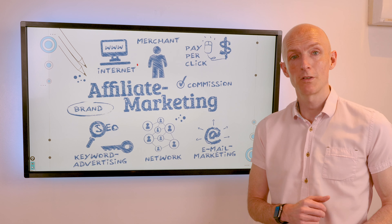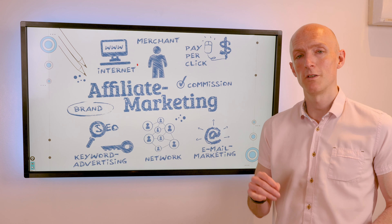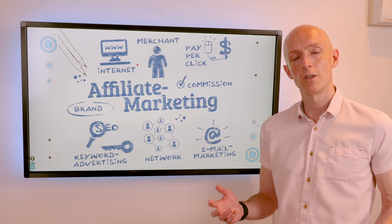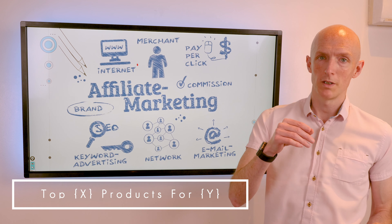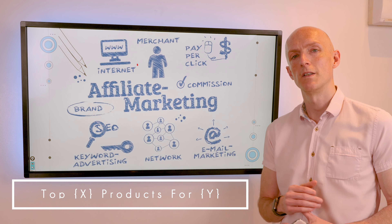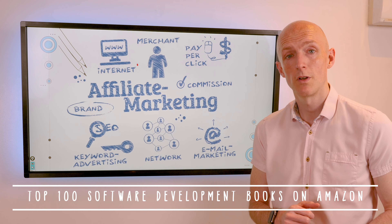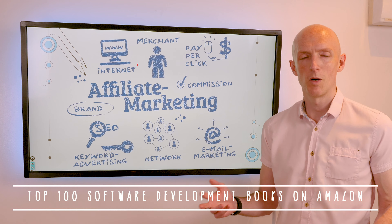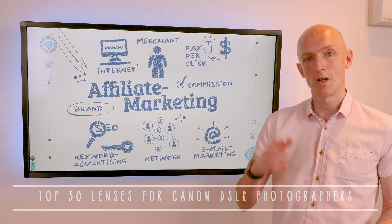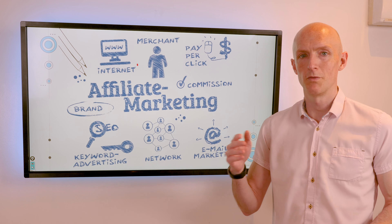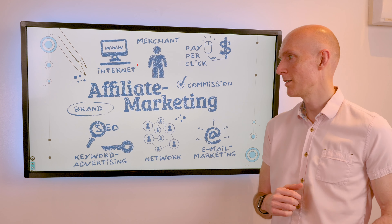Imagine if you created a programmatic SEO system that generates landing pages based on highly searched keywords in a certain niche. You'd be able to quickly generate pages of the format 'top X products for Y', with X being a product type and Y being a demographic or niche — for example, the top 100 software development books on Amazon, or the top 30 lenses for Canon DSLR photographers. By sending traffic via your referral link from your website, blogs and videos, you'll soon build up a steady stream of passive income through affiliate marketing.